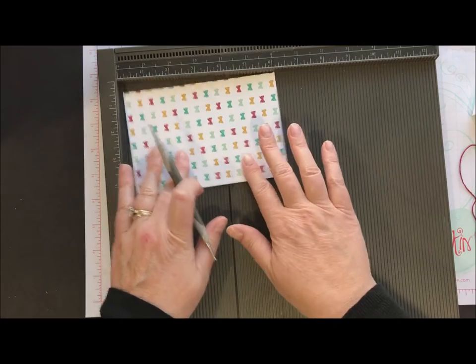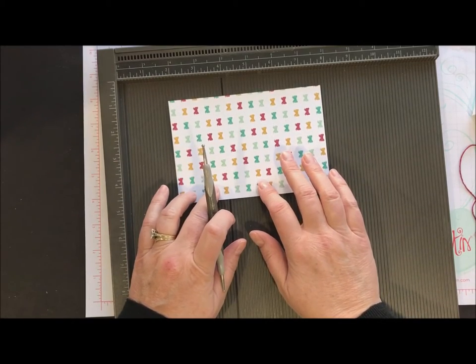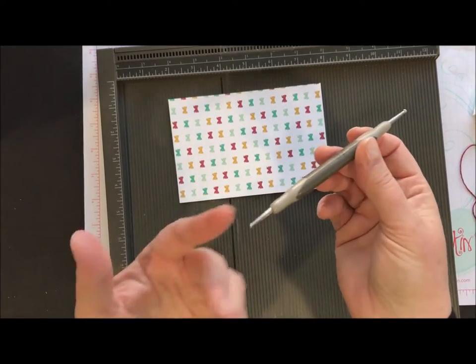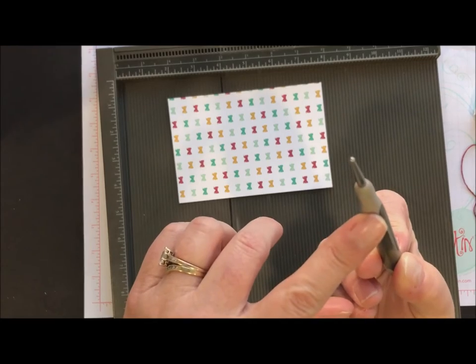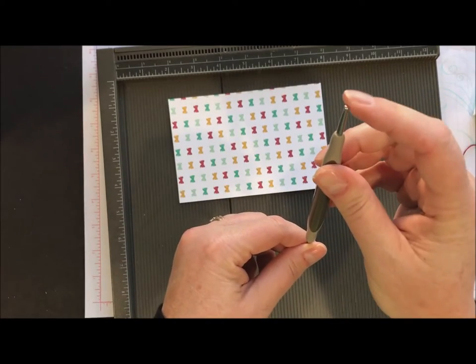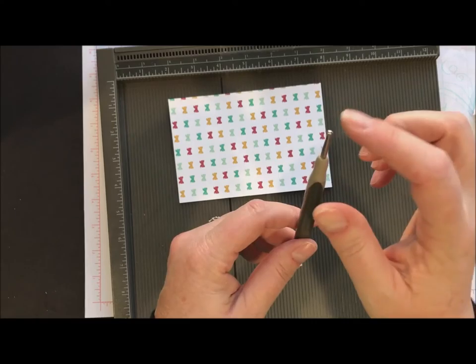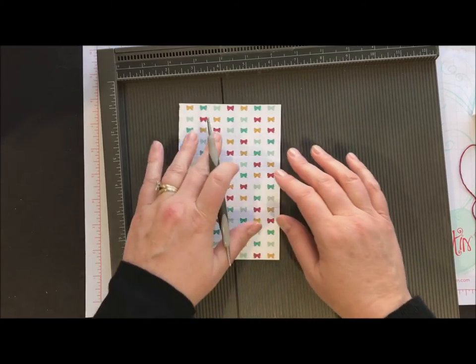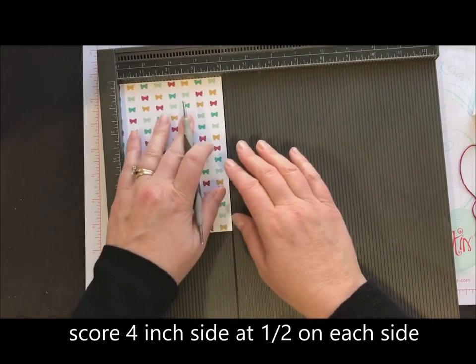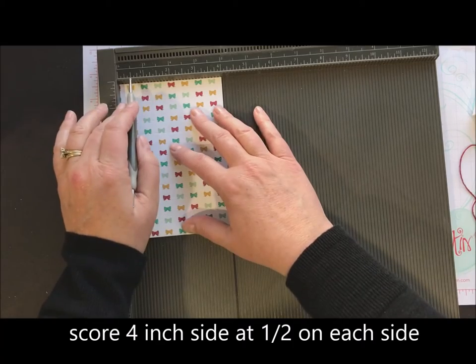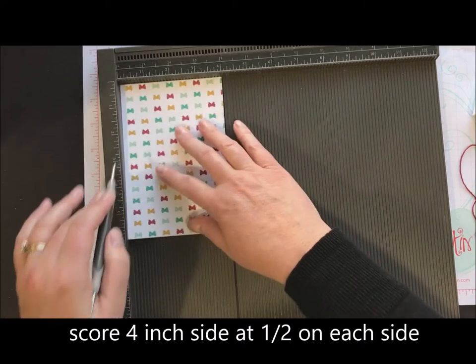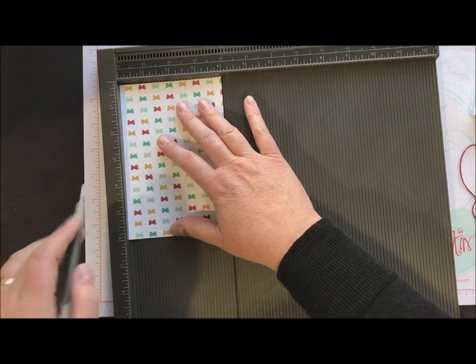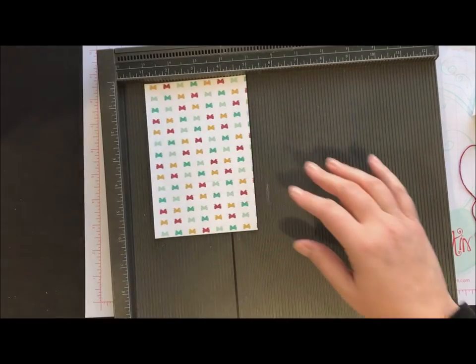Now one little trick to scoring designer series paper, you can tear through your paper very easily with too much pressure. So if you have the Simply Scored tool from Stampin' Up, you'll notice that one of the ends is very small rounded, one is very fat rounded. So I like to use the fat rounded end with my designer paper and just do a nice light score so that I don't tear through my paper. So you're going to flip this around and you're going to score at a half inch on both sides, or both the long sides. So I flipped that over and did a half inch score.